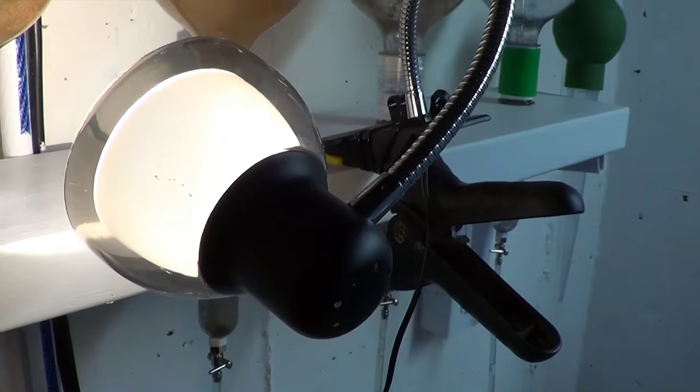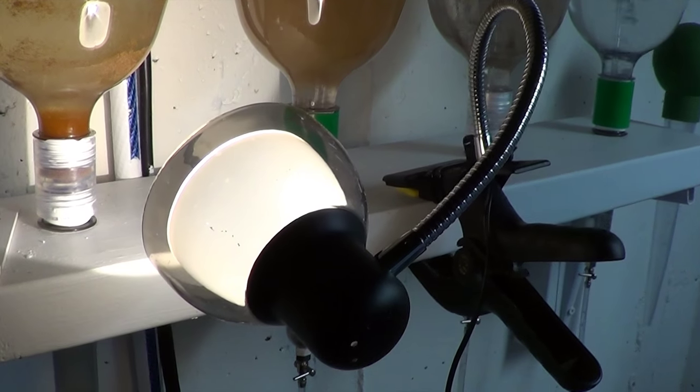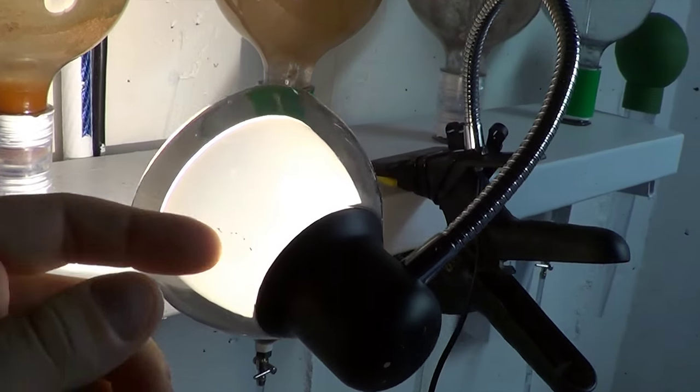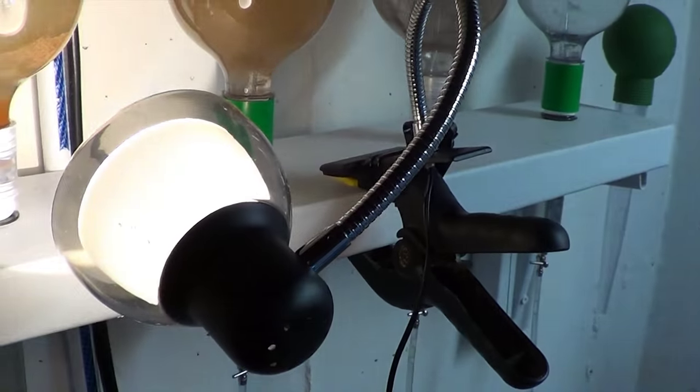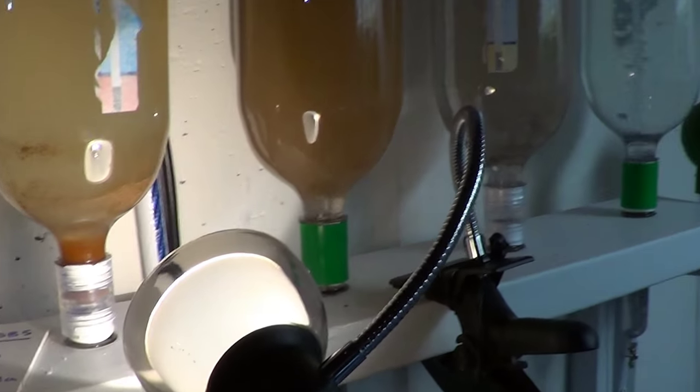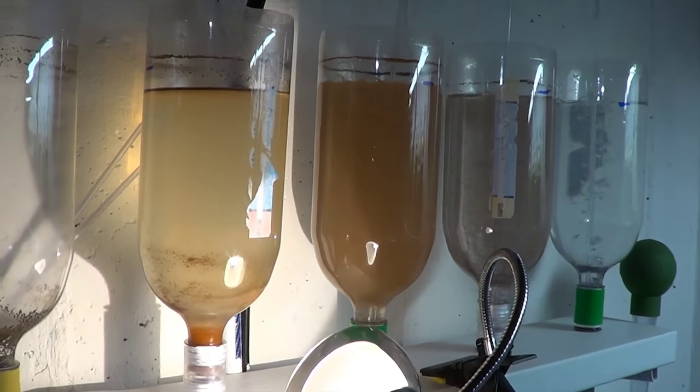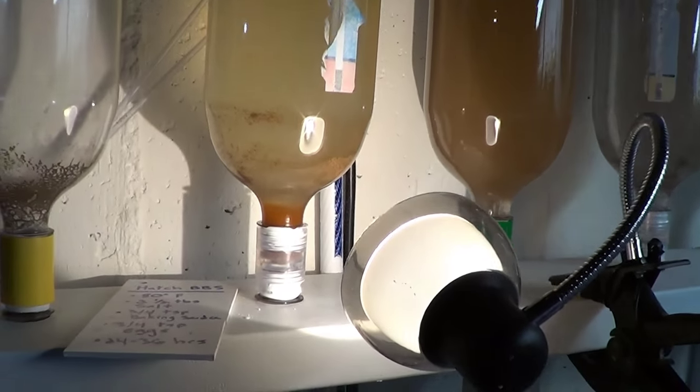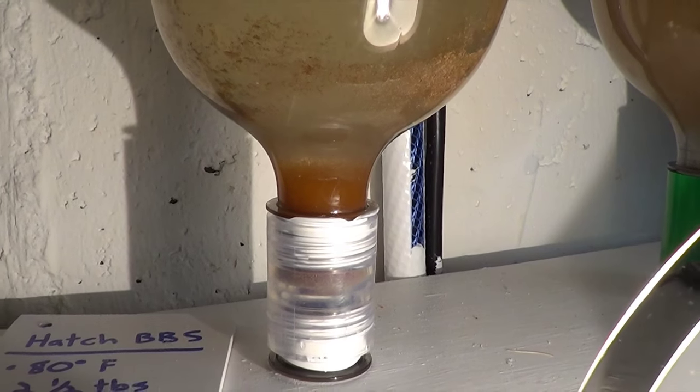This little LED lamp has been really invaluable as well. I got this as a little LED clamp light. There's one little LED in there. It stays relatively cool, and I leave this on 24 hours a day. It's generally pointed kind of at an angle at all of these hatching chambers. But when I'm collecting them, I point it squarely at the neck of that bottle.